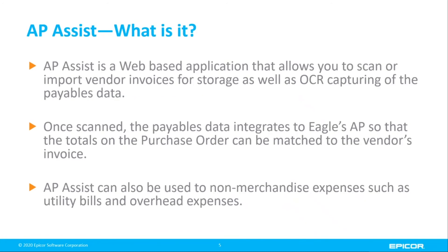AP Assist consists of, first off, a web-based application where we capture key pieces of information from a vendor's invoice — that would be the payables data, the total amount of that invoice, the date, your purchase order number if we're talking about a vendor invoice for merchandise. Once we import or scan — we can work with an emailed invoice or with a physical piece of paper — we then create a file with that information to be imported into Eagle for a comparison as to whether that matches up with your original purchase order.